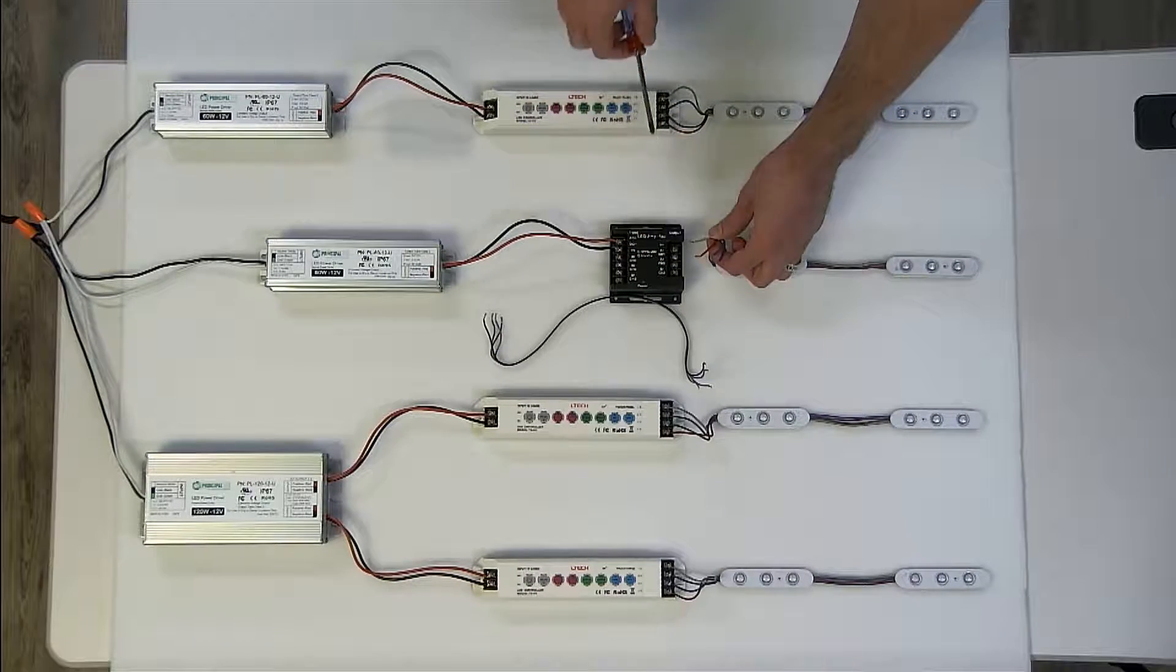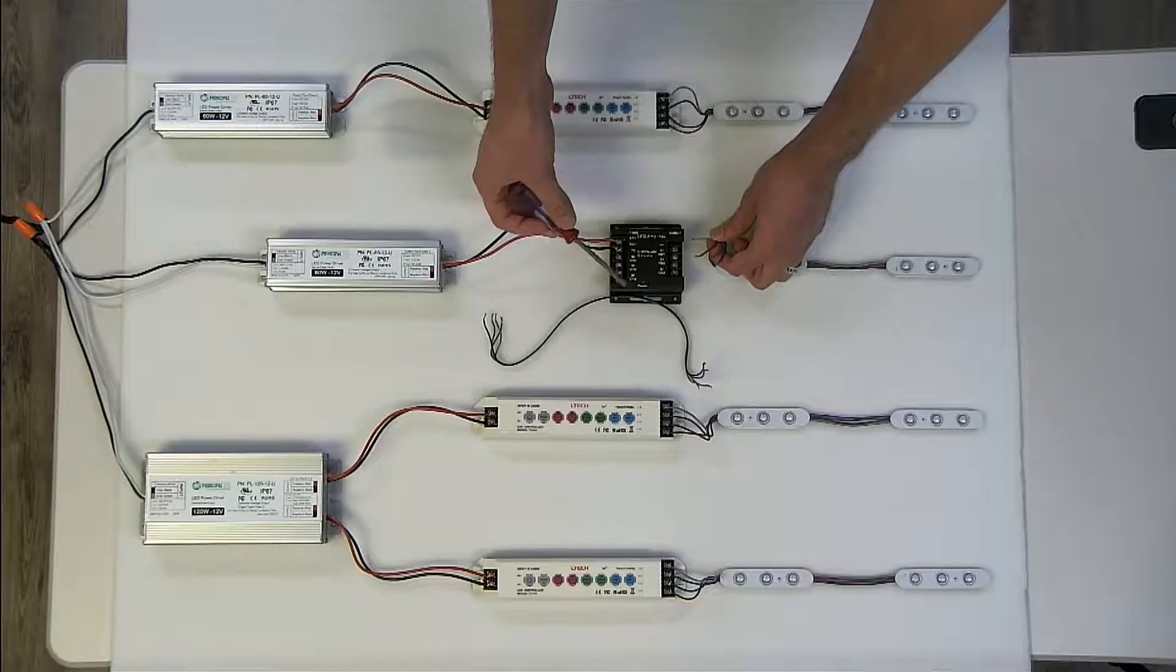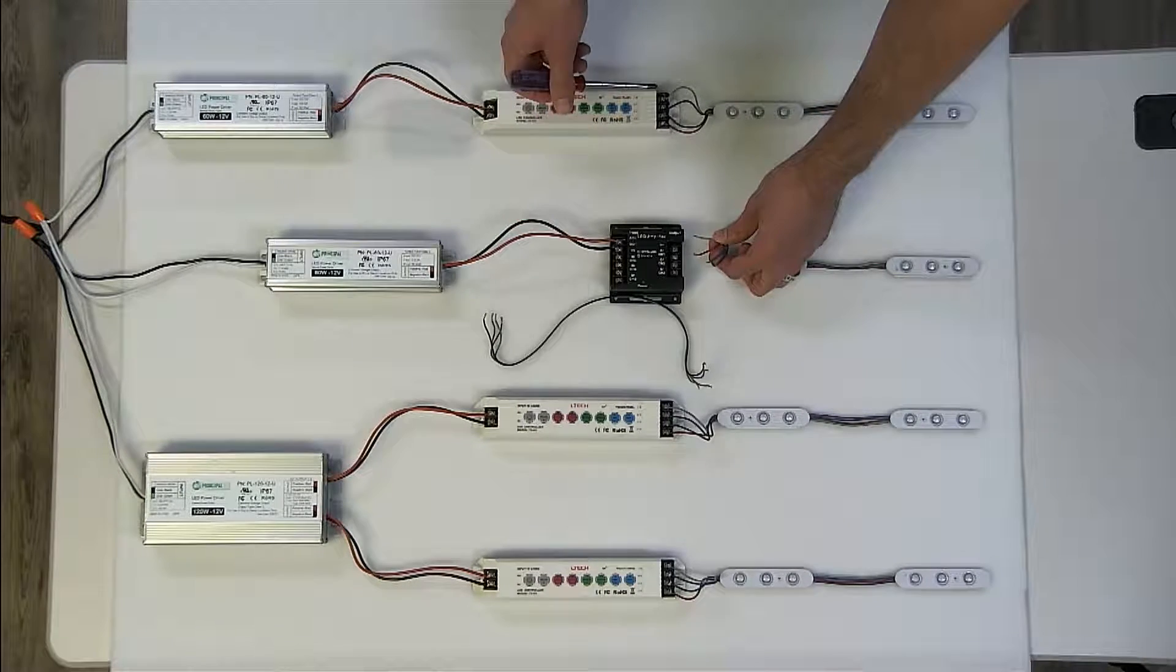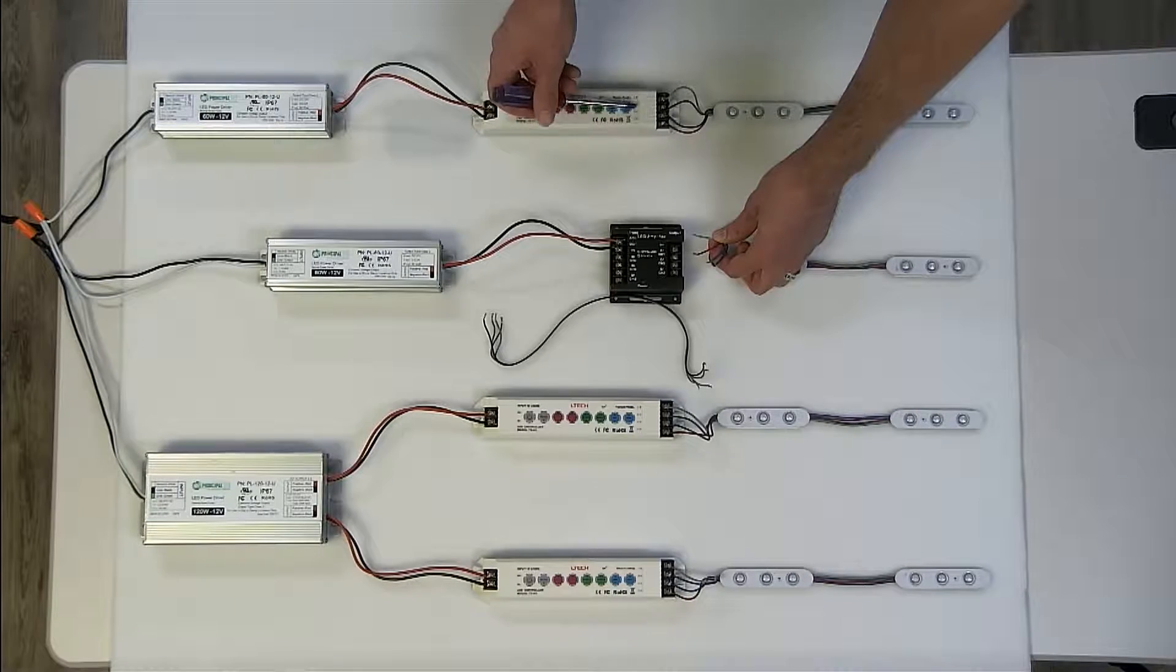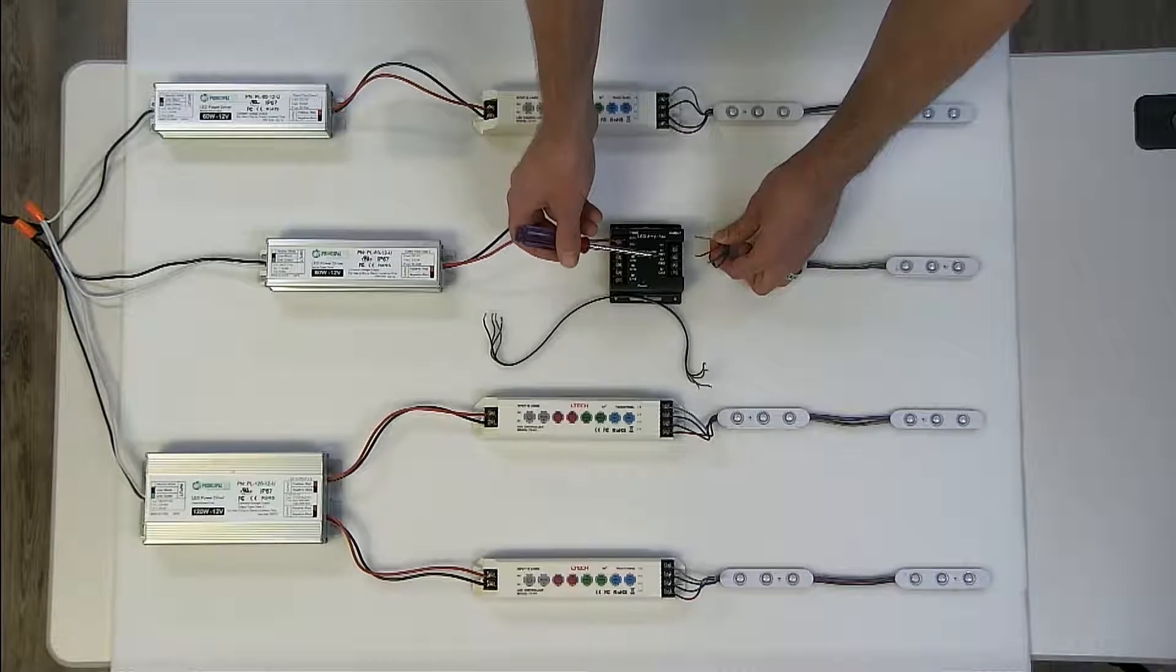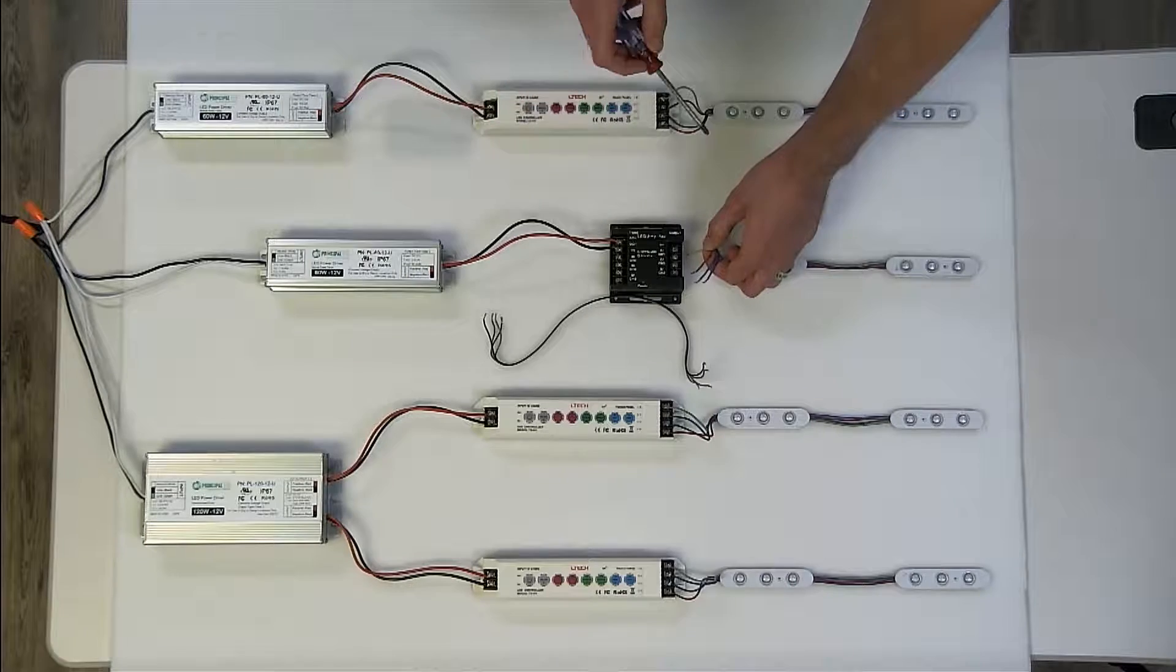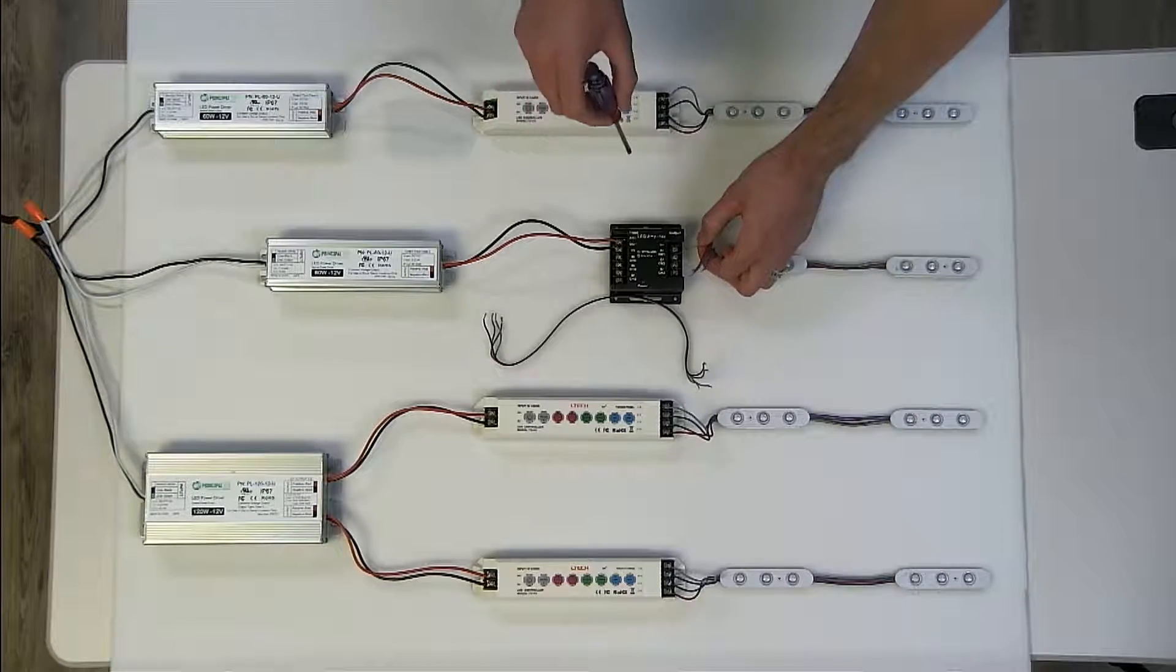It is important to mention that between the controller and the amplifier, the order of the colors is different. Whereas your positive wire is still going to be on top, the controller goes blue, green, red. This one goes red, green, blue. And I will address how to make sure that you keep it the same between the two momentarily.